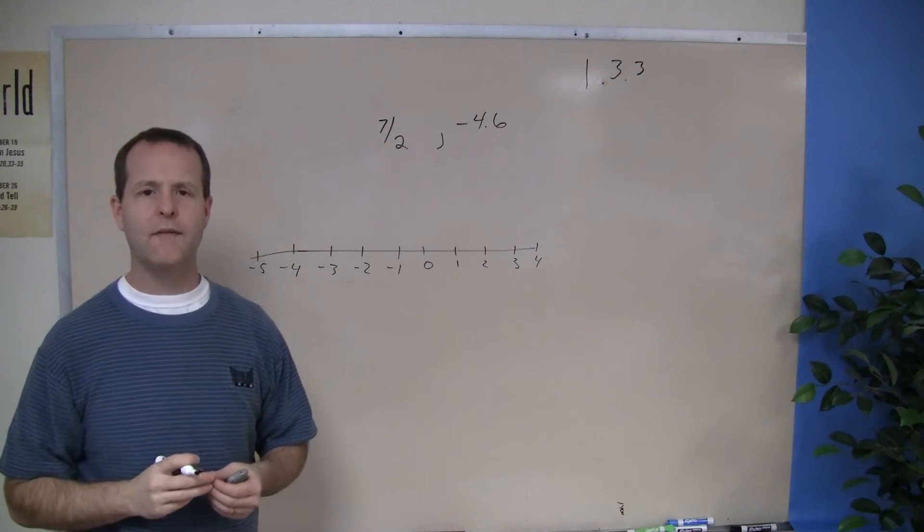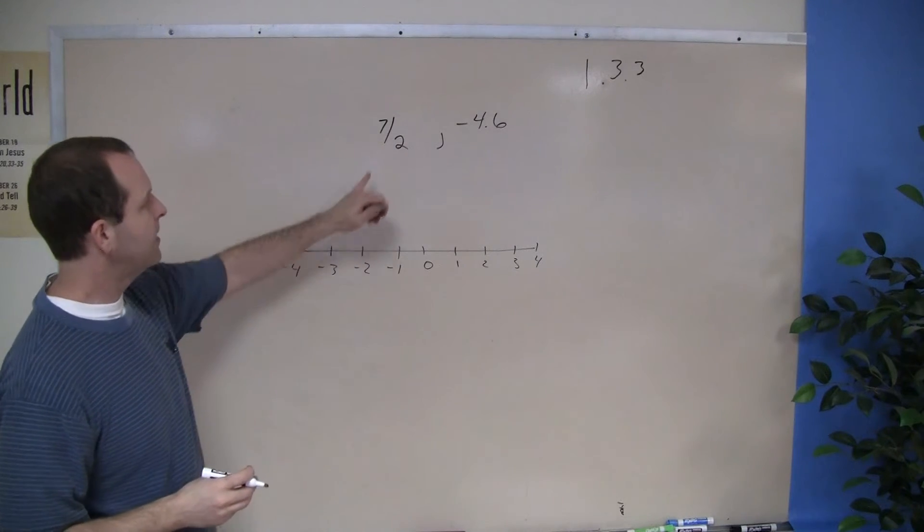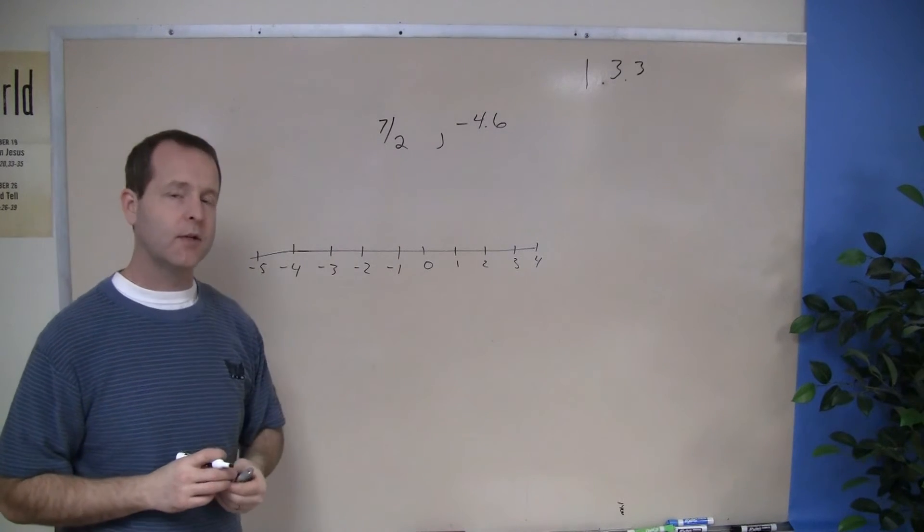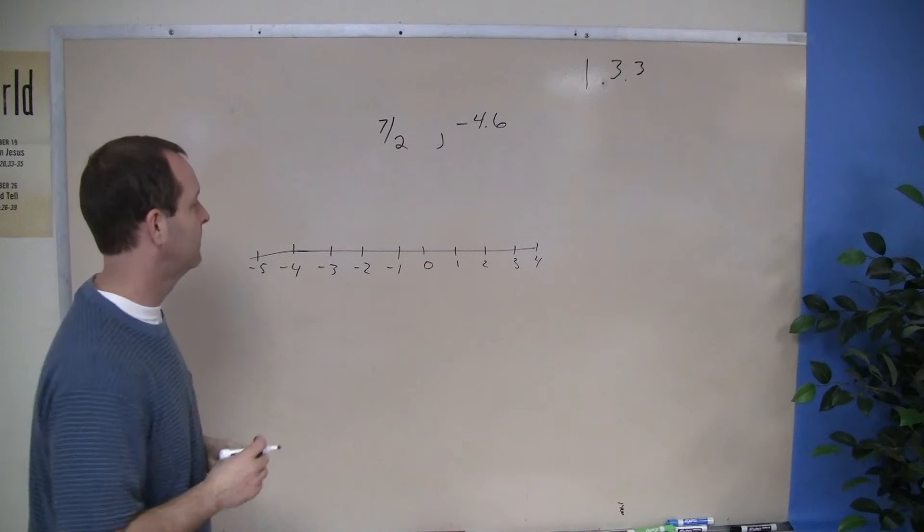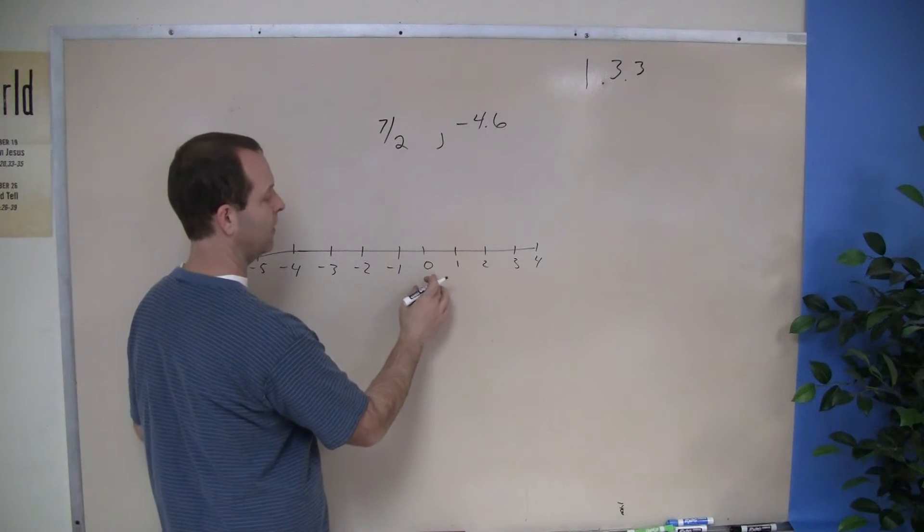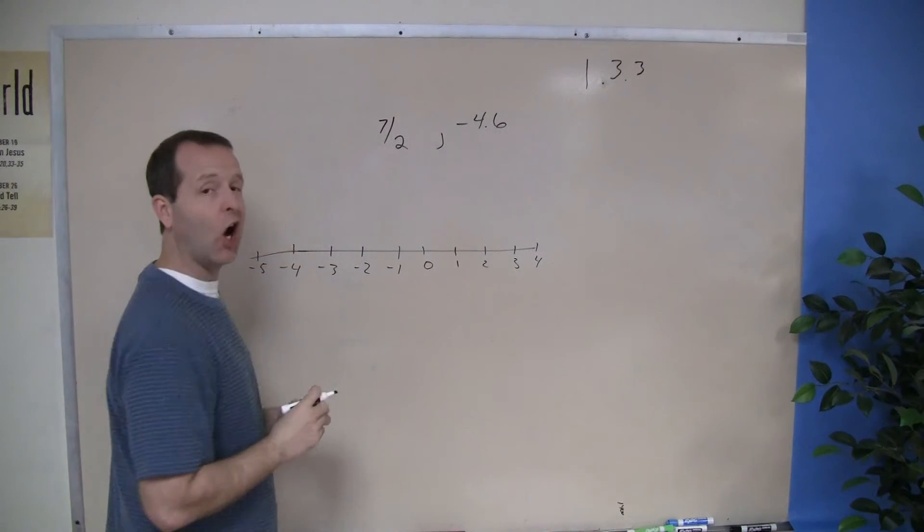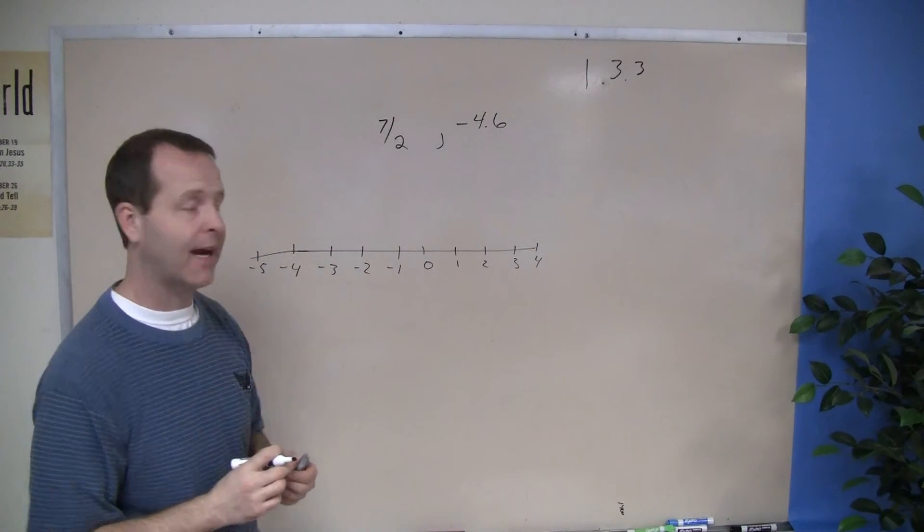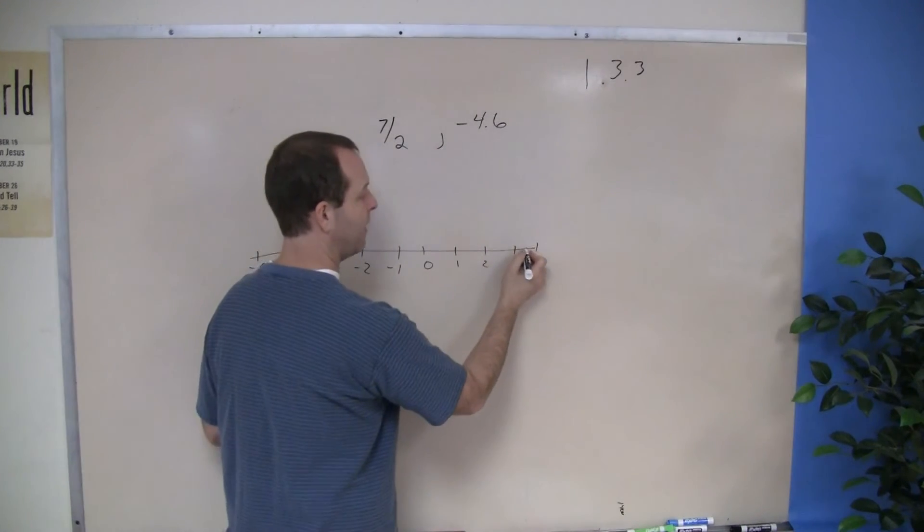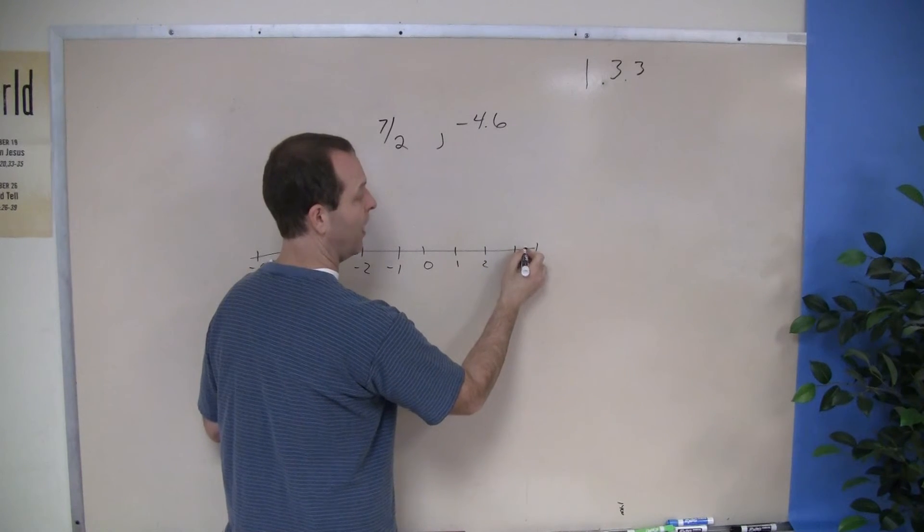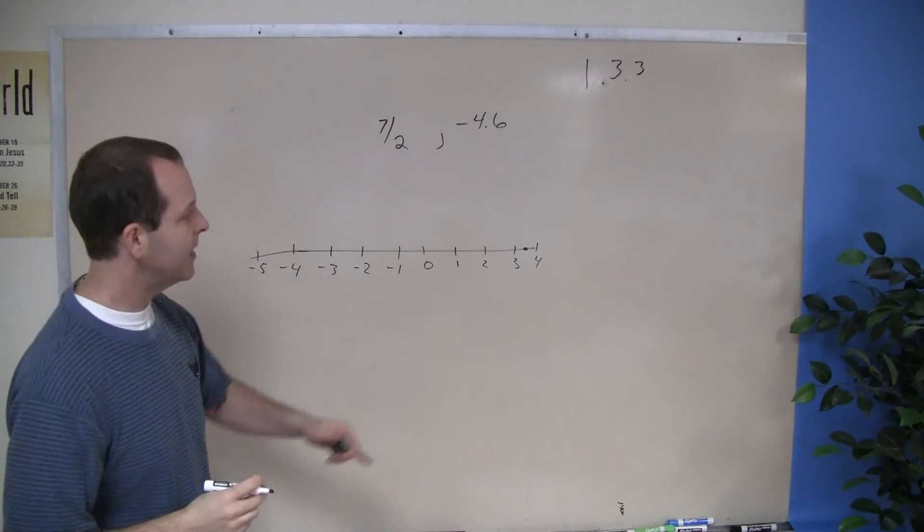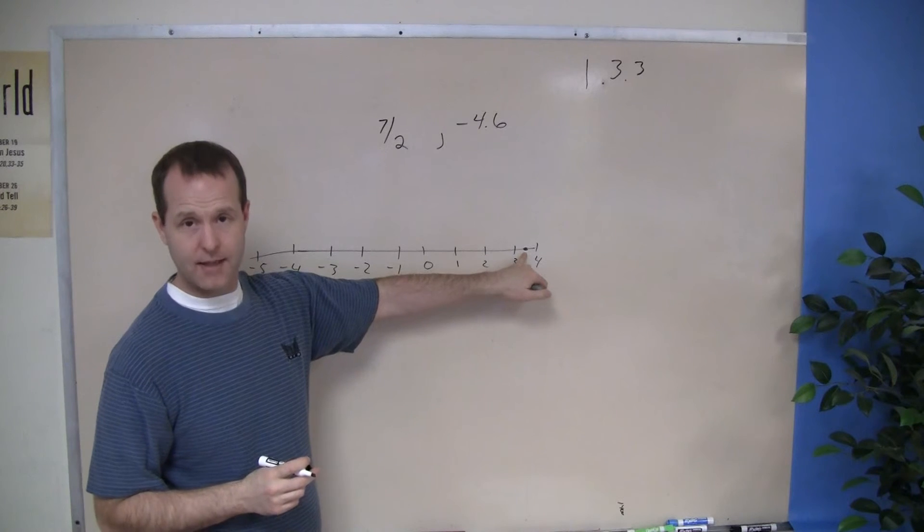So I had the rough start of a number line. 7 halves is 3 and a half. So I can find over 0, 1, 2, 3, and since 3 and a half is not on the number line as a particular tick mark, but I know it's right there between 3 and 4, midway through. So I can say that this point right here is a point 7 halves.